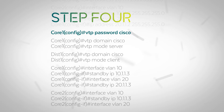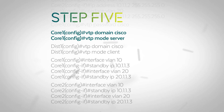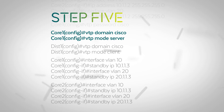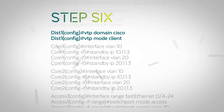Fourth, configure a VTP password on each device. Fifth, configure the two core switches as VTP servers in a single domain — this will allow us to configure VLANs on the core switches and spread them out across all the access switches. Sixth, configure all of the distribution and access switches as VTP clients. This will allow them to receive these updates and add the VLANs into their local database.